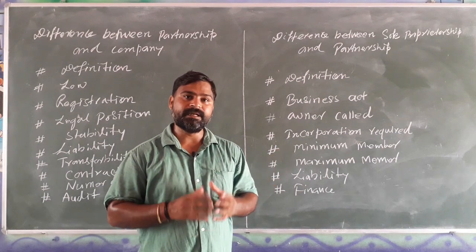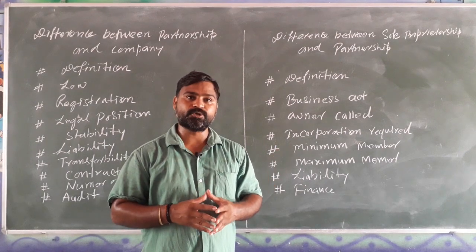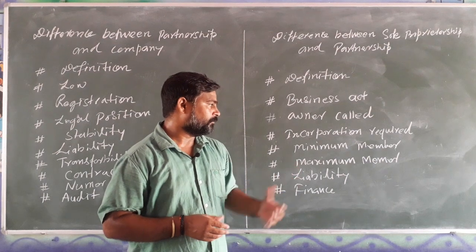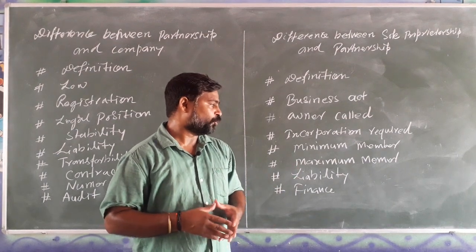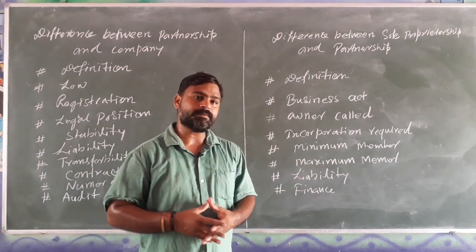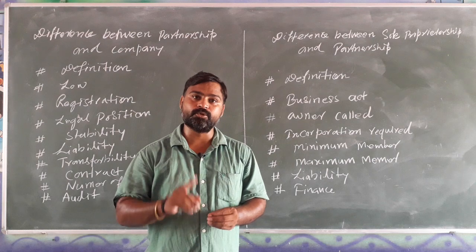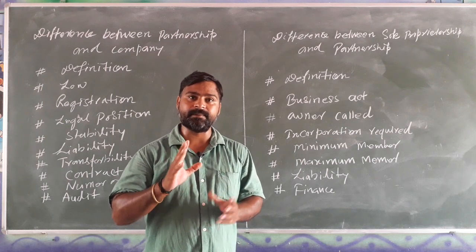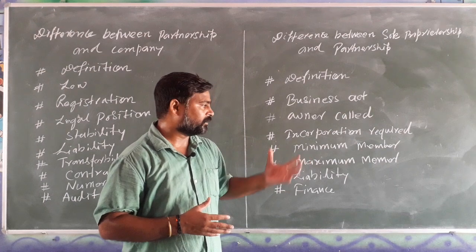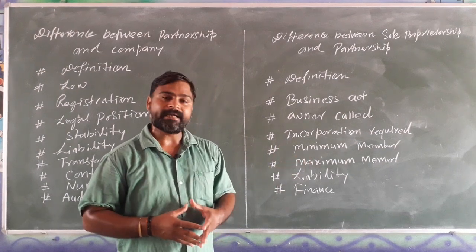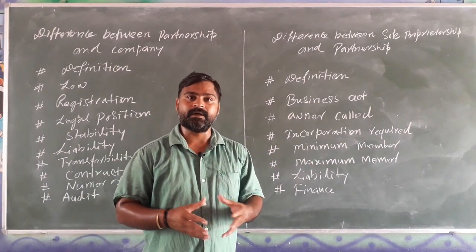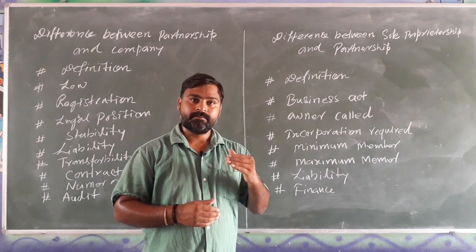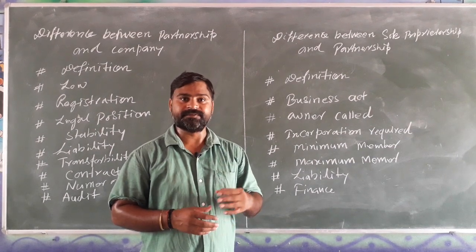For minimum number of members, in a sole proprietorship the minimum number of members is only one person, and in partnership the minimum number of members required is two. The maximum number of members in a sole proprietorship also remains one, but in a partnership the maximum number of members may be 100, or 50 if the partnership is performing banking business.